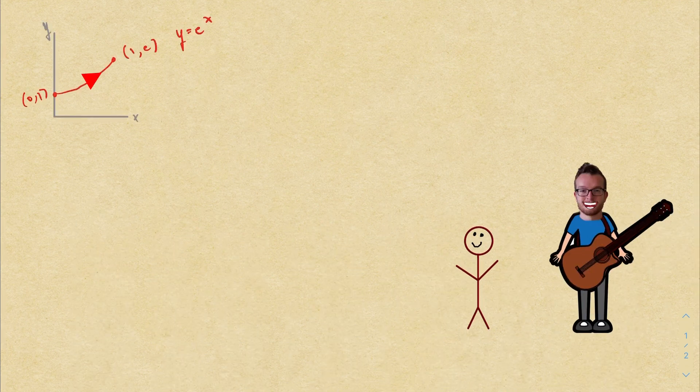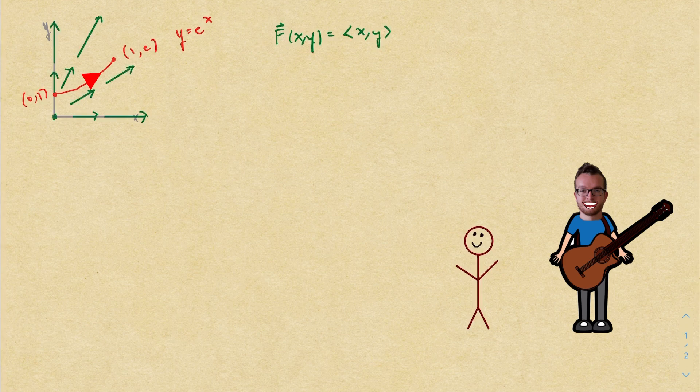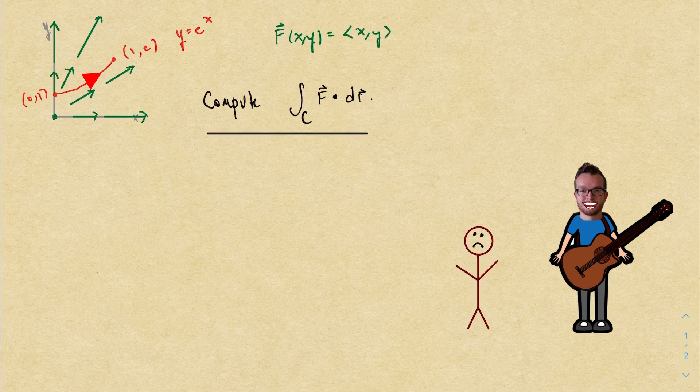Here's a curve that's long and lean, the vector field looks pretty mean, and you're supposed to find the integral. Well, listen up, it's Joseph Breen singing songs in quarantine. I'm here to help, so grab a new pencil.